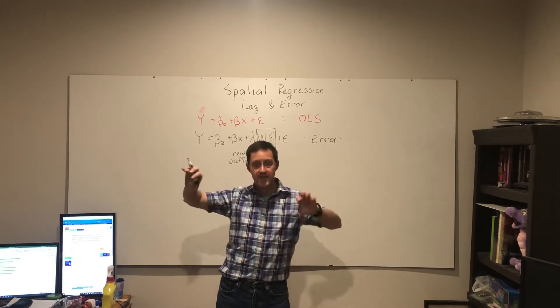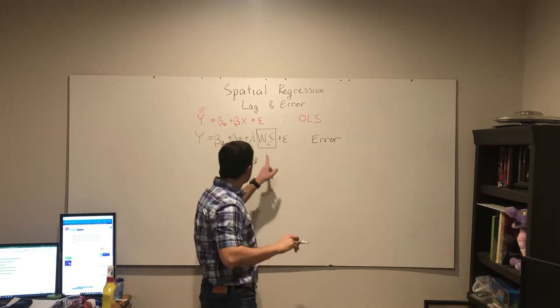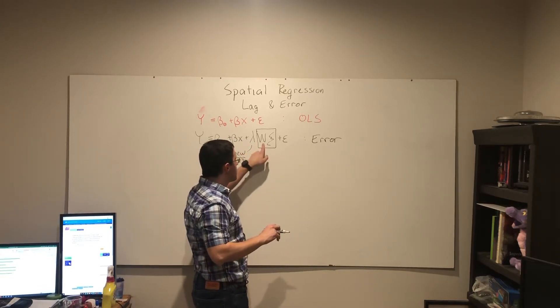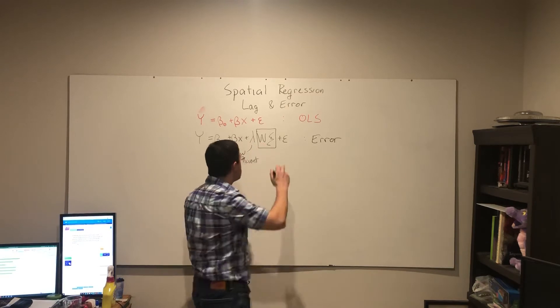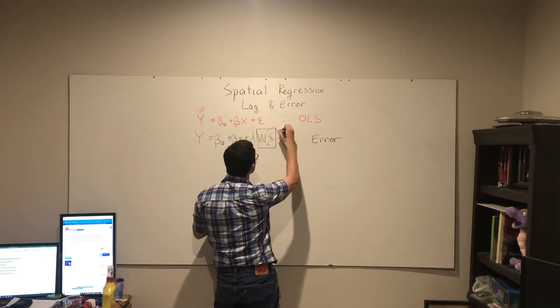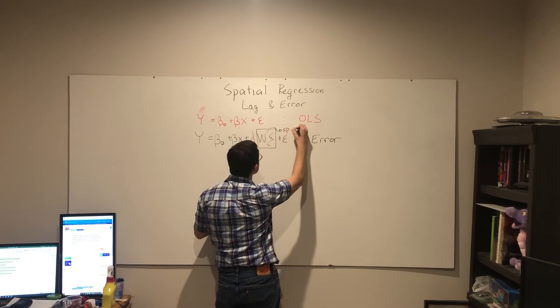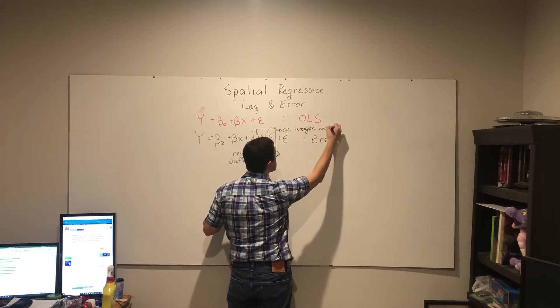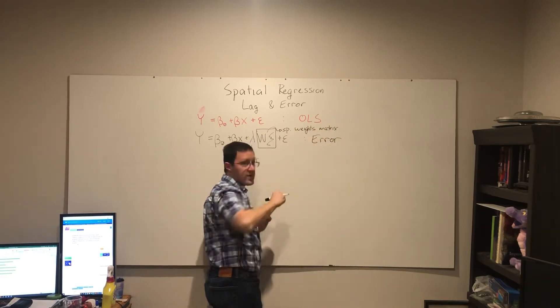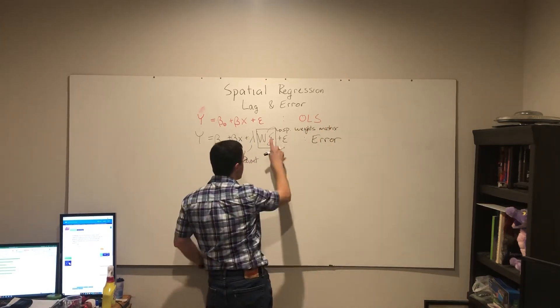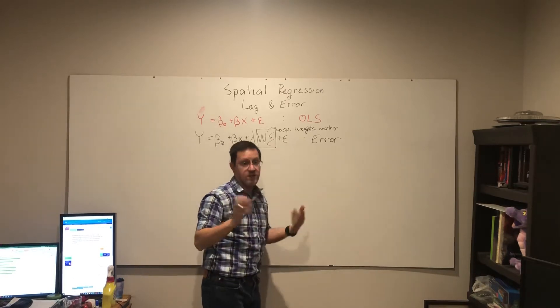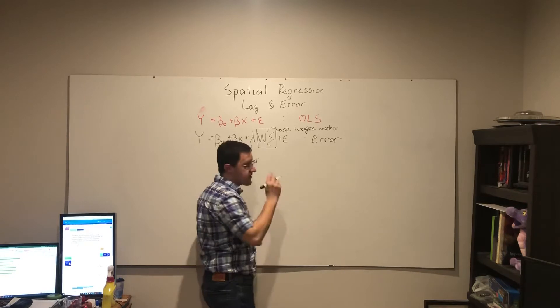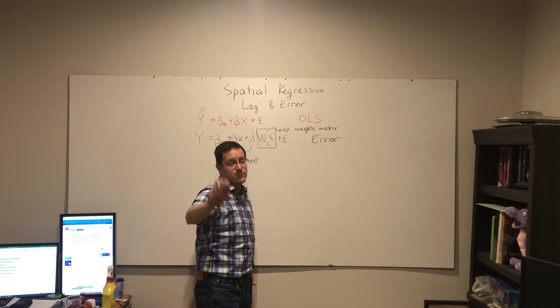So breaking that apart, this lambda, Greek letter lambda, is a new coefficient, is this W in our spatial weights matrix. And the Greek letter is E here, which I just continually call squibble. Our squibble here represents the spatially autocorrelated error part.